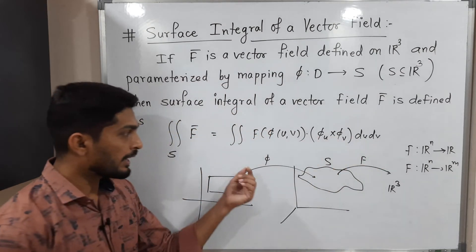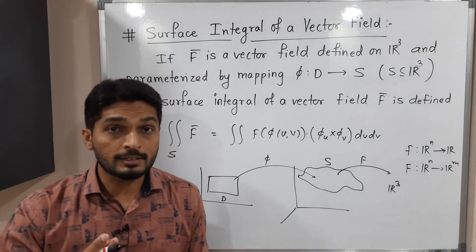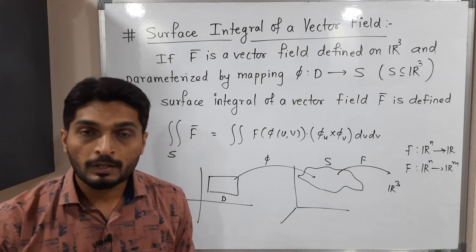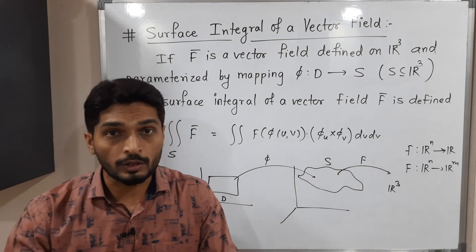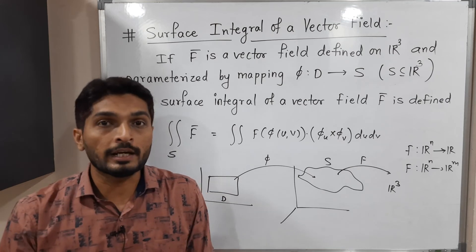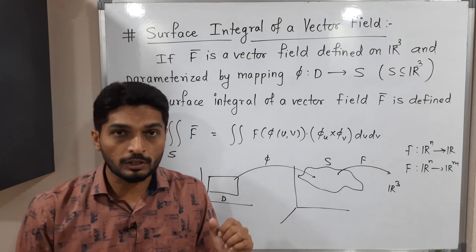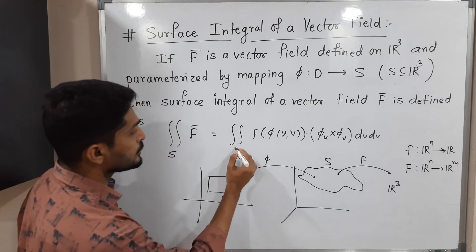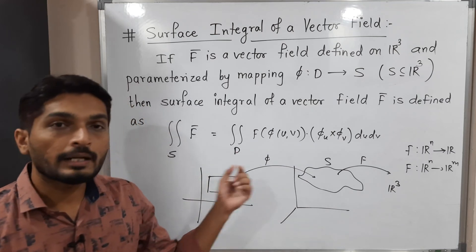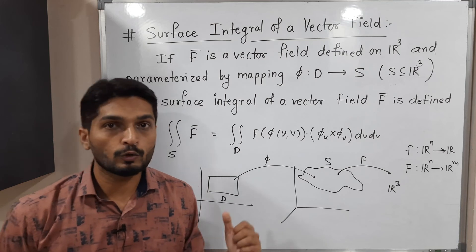That means that parametrization phi we have, we take its derivative with respect to u, we take its derivative with respect to v, we take their cross product. And whatever the answer we get, we take the dot product with this function. And we get this value. And we solve this double integration over domain D, since that parametrization phi is defined on domain D.